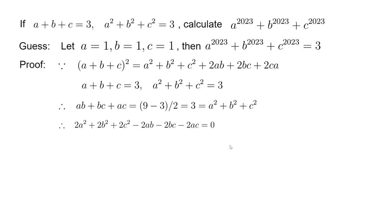So we can rewrite this expression into: (a - b) squared plus (b - c) squared plus (c - a) squared equals 0.